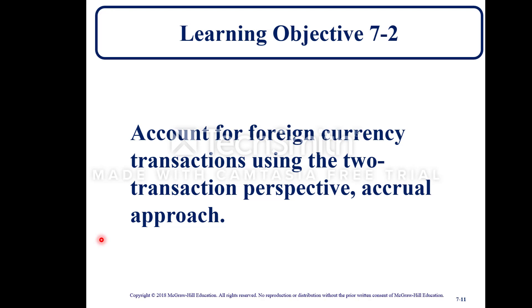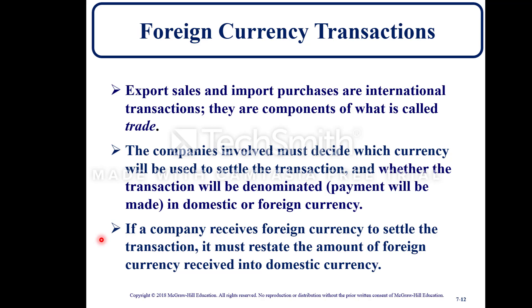Learning Objective 7-2: account for foreign currency transactions using the two-transaction perspective accrual approach. This section discusses types of foreign transactions and their business exposures. Export sales and import purchases are international transactions that are components of trade. The companies involved must decide which currency will be used to settle the transaction — whether payment will be made in domestic or foreign currency. If a company receives foreign currency, it must restate that amount into domestic currency.